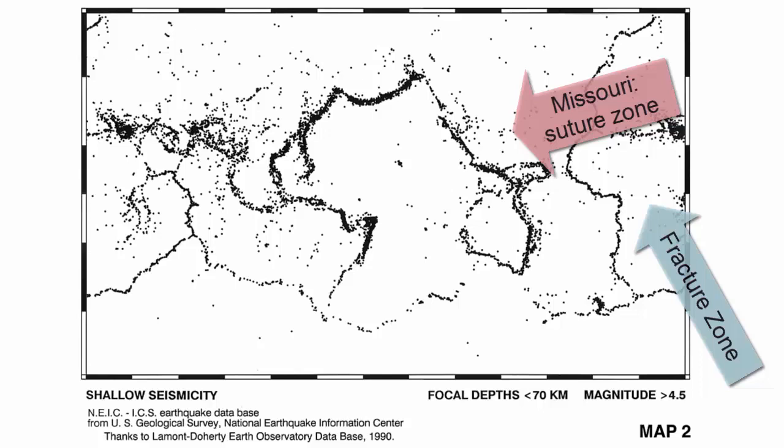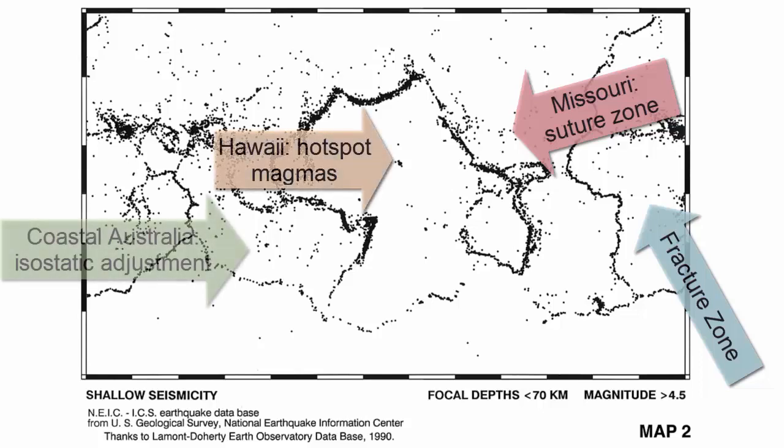Minor earthquakes happen as magmas move through the crust above hotspots and where isostatic adjustment is happening, especially along coastlines.